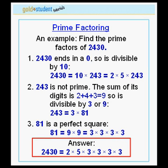Therefore, we have our final answer. The number 2,430 is equal to 2 times 5 times 3 times 3 times 3 times 3.